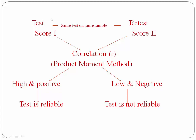Coming back to the initial point about consistency of scores: what we have done in test and retest is that the two scores must be highly correlated. We need to get a high positive correlation between the two administrations. This technique is what we call test-retest reliability.